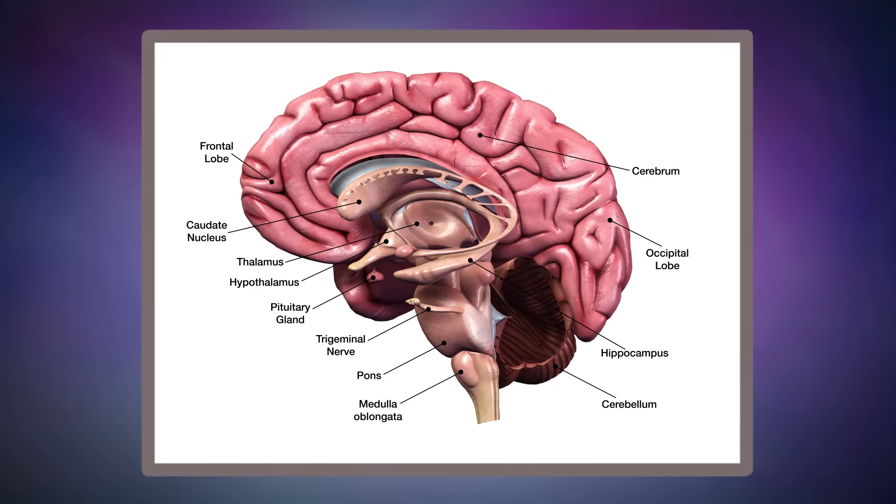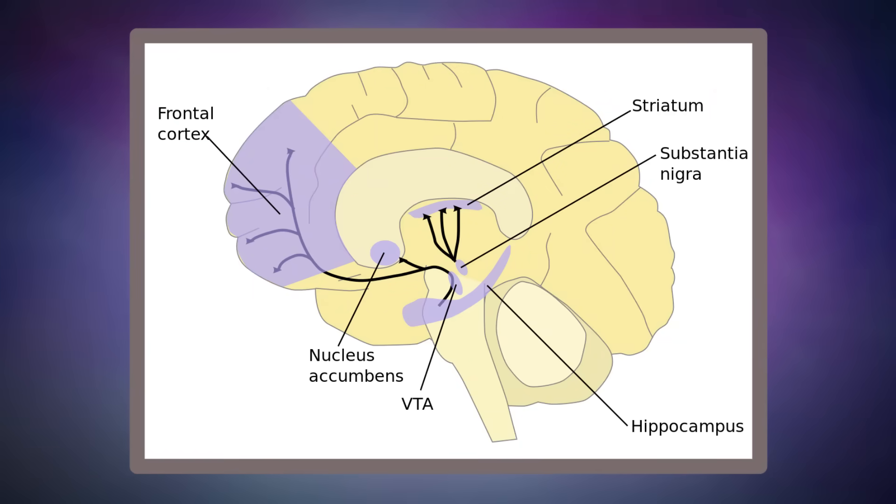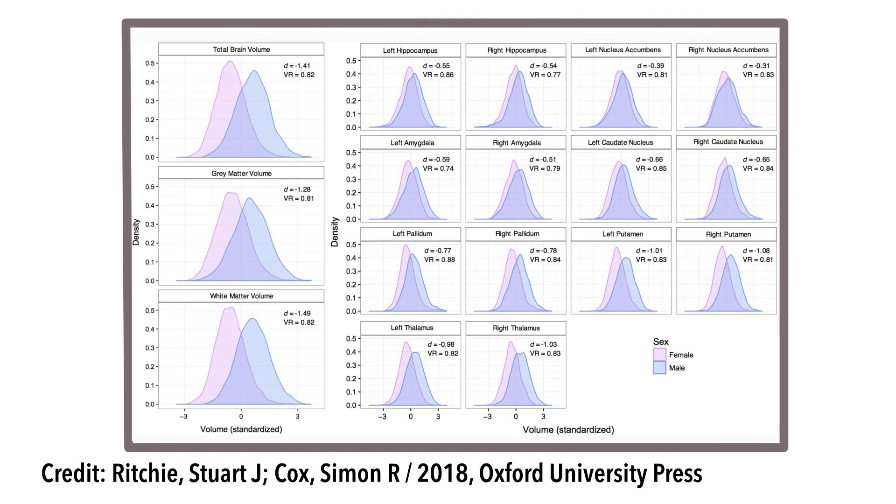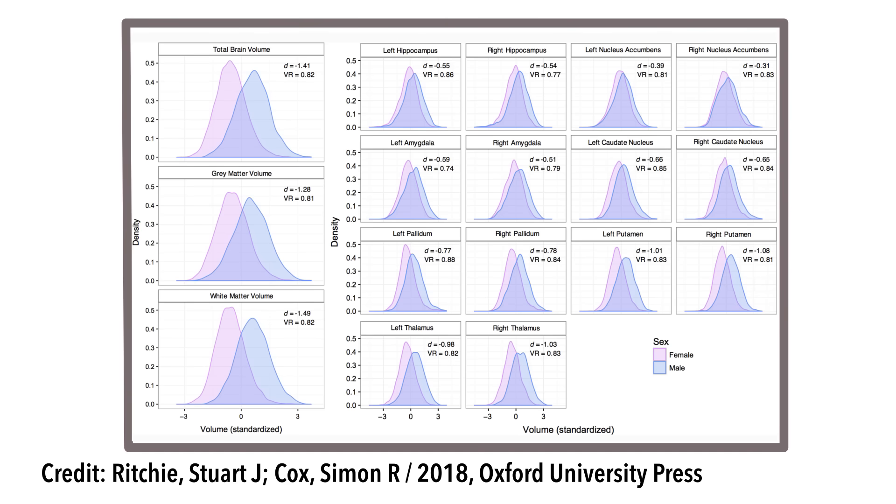When the size of the brain was accounted for, though, the sex differences in the size of most of these regions disappeared. So did the size differences in structures like the hippocampus, caudate nucleus, and thalamus. And females ended up having larger relative volumes for 10 regions, as well as the right nucleus accumbens. But the differences in size of these structures, absolute or relative, were small, and there was a lot of overlap.